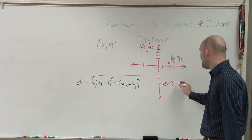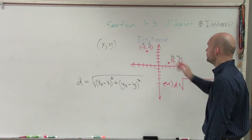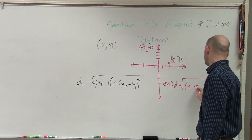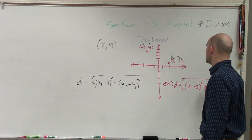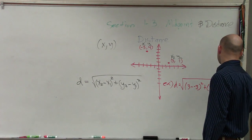So therefore, now let's just plug in what we have. To find the distance, you take x2, which is 3, minus x1, which is negative 3, squared, plus y2, which is 1, minus y1, which is 4, squared.